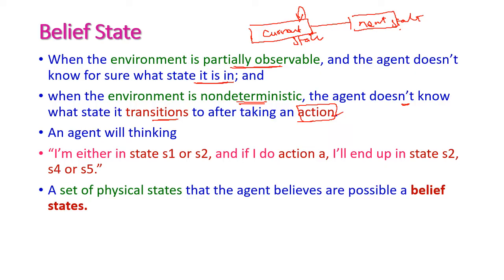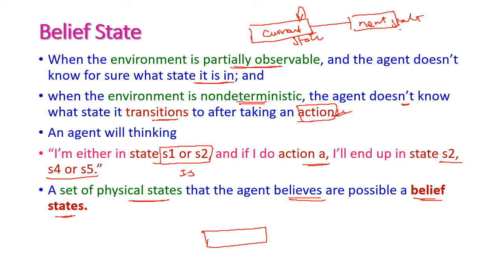The agent thinks it is currently in either S1 or S2 — these two are initial states. If it performs any action in those initial states, it may end up in state 2, state 4, or state 5. Everything is unknown to the agent. The set of physical states that the agent believes are possible is called a belief state. In a partially observable environment, if the agent performs any action in the current state, it will have only an expected next state, not the exact next state. These expected next states are called belief states.